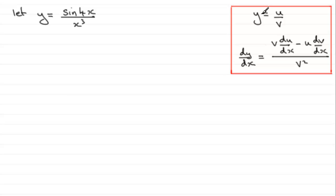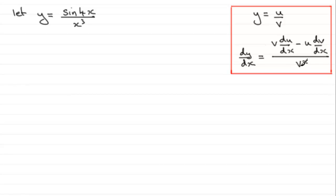As a brief reminder, if we have two functions of x divided by one another — u over v — then dy/dx turns out to be v·(du/dx) minus u·(dv/dx), all over v squared. I like to remember this as: the bottom of the fraction times the differential of the top, minus the top times the differential of the bottom, all over the bottom squared. I'm going to go straight into it without writing u equals this and v equals that.